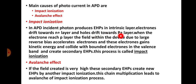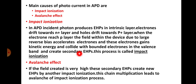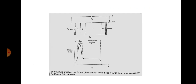The electrons generated in the intrinsic layer drift towards the n-plus layer, and holes drift towards the p-plus layer, driven by the electric field. To travel from the intrinsic layer to the n-plus layer, the electrons must pass through the p layer. When electrons reach the p layer, the high electric field due to the large reverse bias accelerates them, and they gain sufficient kinetic energy to collide with bound electrons in the valence band, creating secondary electron-hole pairs. This process is called impact ionization.